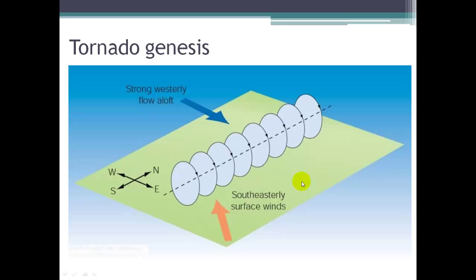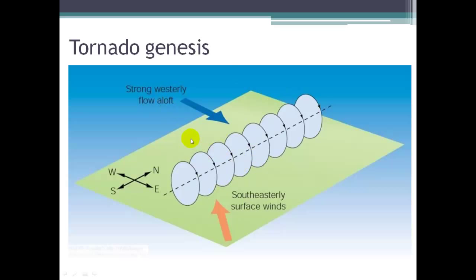Here we're seeing shear. So looking at what's happening with the winds, we've got higher winds aloft and lower winds below. The surface winds are blowing from the southeast, while the upper air winds are blowing from the west and faster. So we've got wind shear, and you can imagine if you roll something between your hands with your hands moving in opposite directions, it's going to cause a spiral to form.